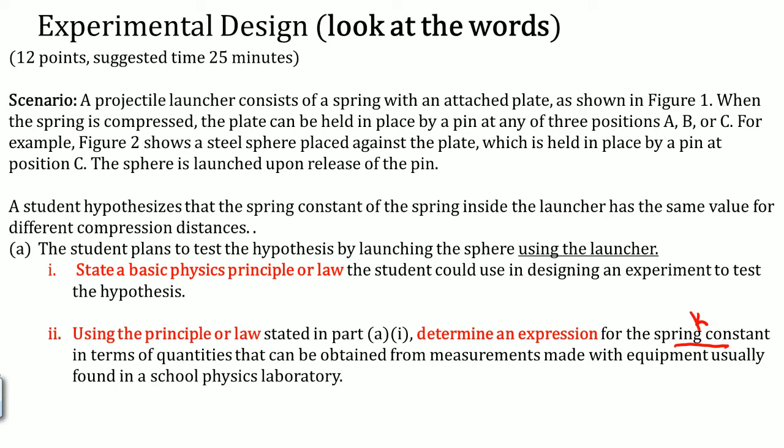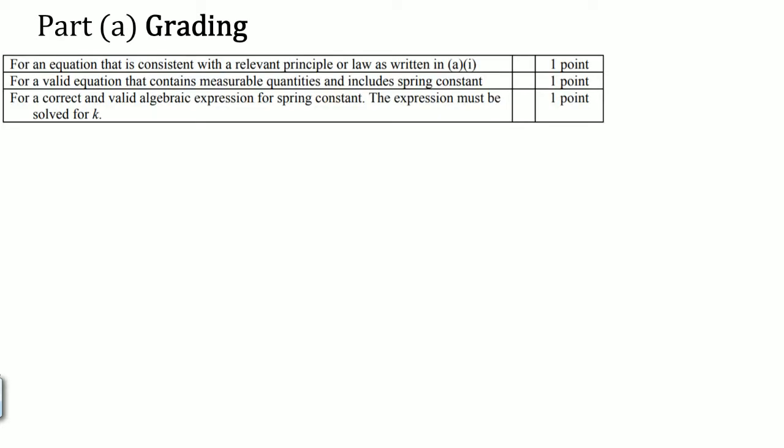Let's take a look at how Part A is graded. It is worth three points: one for an equation consistent with a law or principle, two for a valid equation containing certain variables including the spring constant, and three for a correct and valid algebraic expression for the spring constant. In the end, K must equal something.